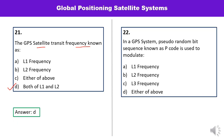Question number twenty-two: In a GPS system, the pseudorandom bit sequence known as P code is used to modulate which particular frequency — L1, L2, L3, or any of the above? It is actually used to modulate the L2 frequency, so B is the correct answer.